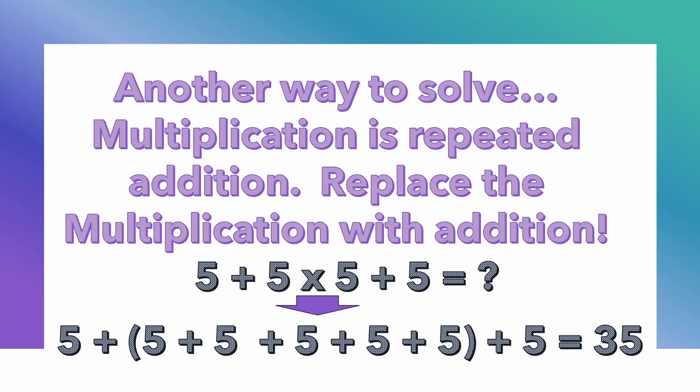The only operation being done in that last equation is addition, so it doesn't matter where I put the parentheses — around the first 5 plus 5, the last 5 plus 5, or nowhere at all. You have to understand what parentheses do. You end up with an answer of 35 because you're adding five sevens, which is the same as 5 times 7 or 7 times 5.